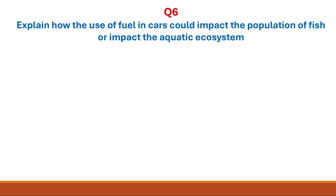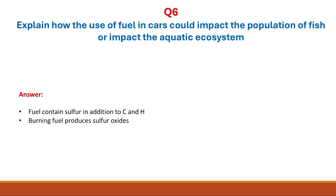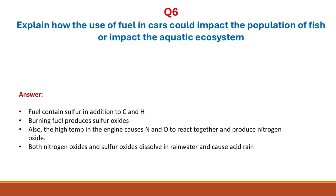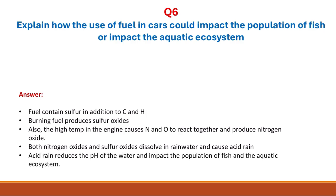Question 6: explain how the use of fuel in cars would impact the aquatic ecosystem. Fuel contains sulfur in addition to carbon and hydrogen, and burning fuel produces sulfur oxides. Also, the high temperature in the engine causes nitrogen and oxygen from air to react together to produce nitrogen oxides. Both nitrogen oxides and sulfur oxides dissolve in rainwater and cause acid rain, which reduces the pH of water and impacts the population of fish and the aquatic ecosystem.